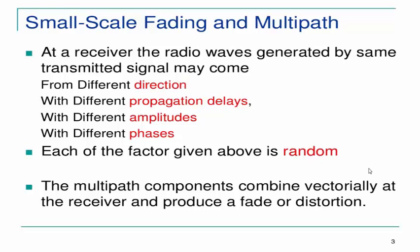At the receiver, radio waves generated by the same transmitted signal may come from different directions with different propagation delays, different amplitudes, and different phases. Each of these factors is random in nature. As discussed in the large scale propagation model, this randomness factor also needs to be considered in the small scale fading concept. Multipath components combine vectorally at the receiver and produce a fade or distortion in the radio channel.